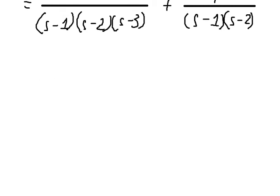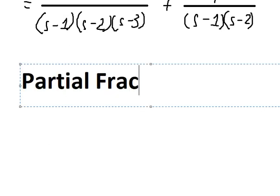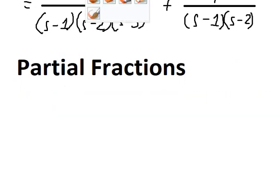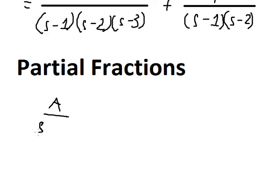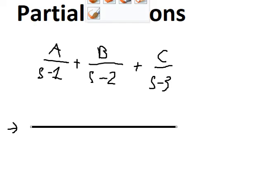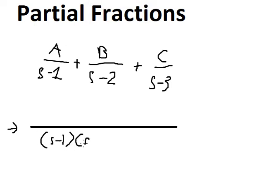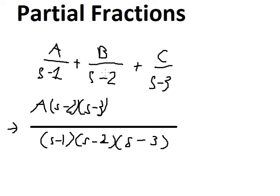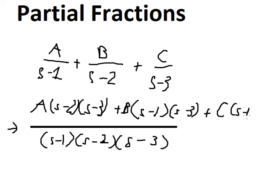So we can do partial fractions. I will go to the first one. We put A over (h minus 1), plus B over (h minus 2), plus C over (h minus 3). Then we find the common denominator: (h minus 1)(h minus 2)(h minus 3). So we have A multiplied by (h minus 2)(h minus 3), B multiplied by (h minus 1)(h minus 3), and C multiplied by (h minus 1)(h minus 2).